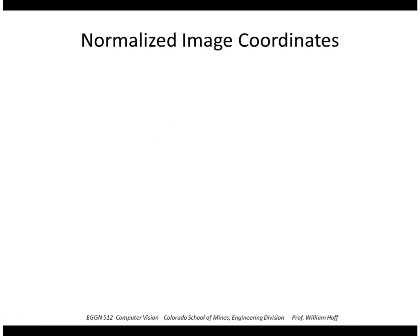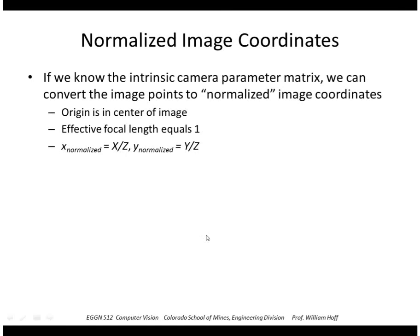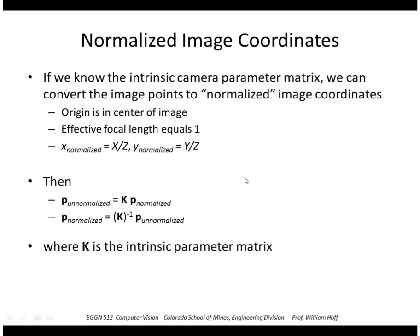First we need to use a concept called normalized image coordinates. If we know the intrinsic camera parameter matrix, we can convert the image points to normalized coordinates such that the origin is in the center of the image and the focal length equals one. We can convert from normalized coordinates to unnormalized coordinates by multiplying by K, or we can go the other way by multiplying by K inverse.